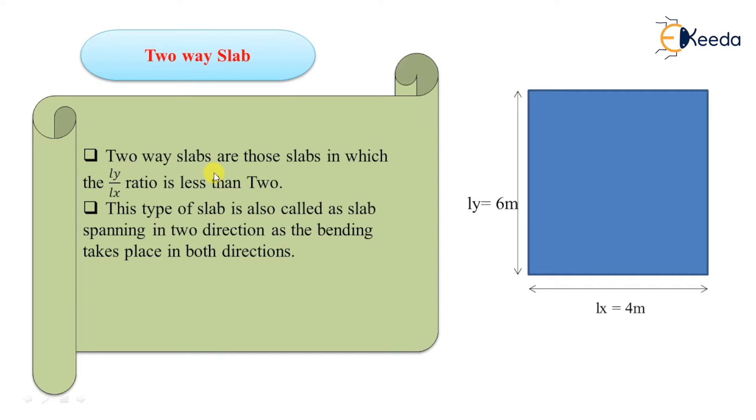In two way slab, the bending takes place in both directions. Therefore, the main reinforcements are provided along the both directions and the slab is also called as slab spanning in two directions.